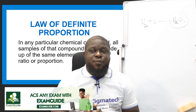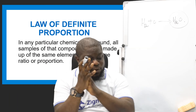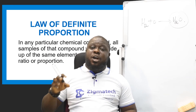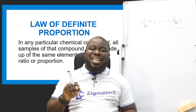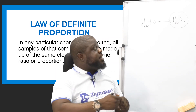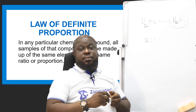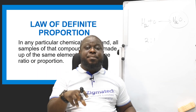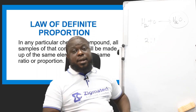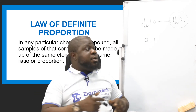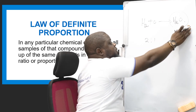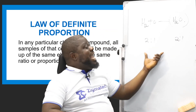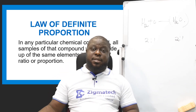The third is the Law of Definite Proportion (also called the Law of Constant Composition), given by Joseph Proust. It states that in a particular chemical compound, all samples of that compound will be made up of the same elements in the same ratio or proportion. For water, H₂O: the ratio is 2:1 for hydrogen to oxygen before the reaction, and the product still has the same 2:1 ratio — there is no difference; it remains the same.